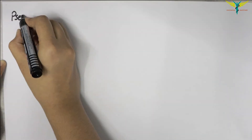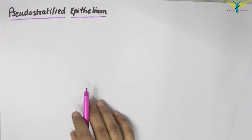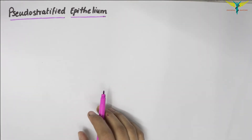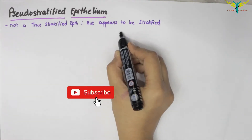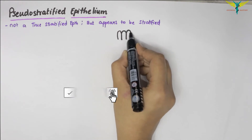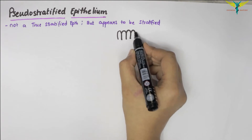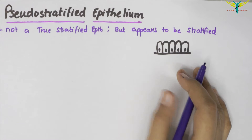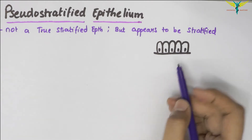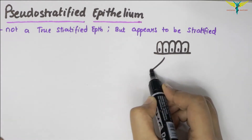In this video, let's learn about the pseudo-stratified epithelium. The pseudo-stratified epithelium is not a true stratified epithelium, but it appears to be stratified. Normally in a columnar epithelium, the nuclei lie in a row towards the basal part of the cells. But in the pseudo-stratified epithelium, the nuclei appear to be arranged in two or more layers, giving the impression that the epithelium is more than one cell thick.